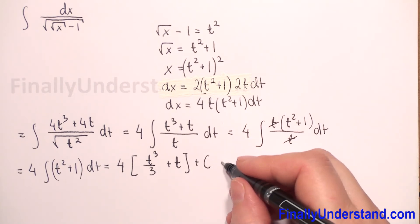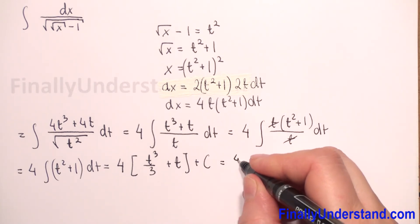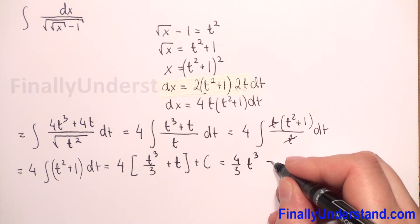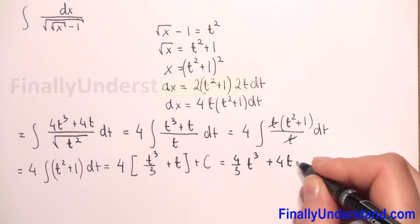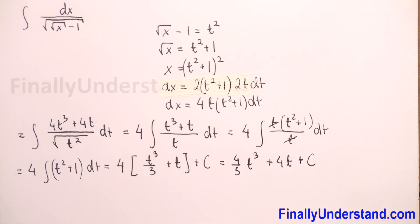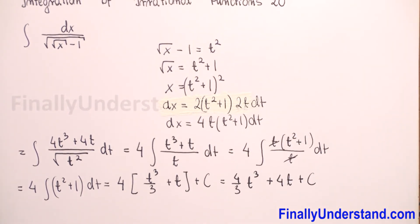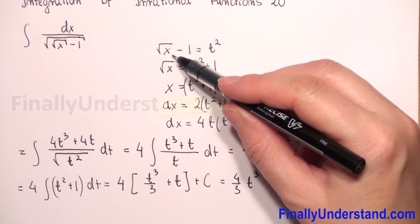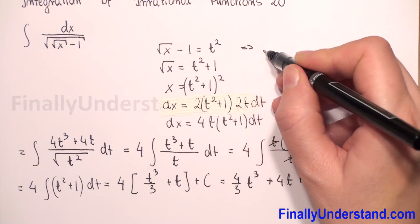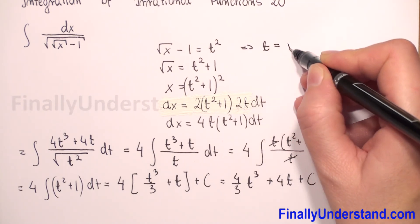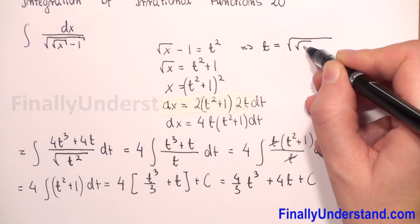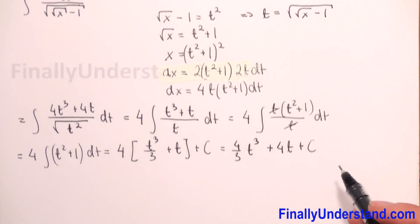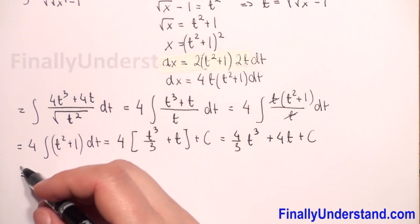So this is equal to 4 over 3 times t cubed plus 4t plus c. Now we have to come back to our substitution. We have that t squared is square root of x minus 1, which means t is equal to the square root of the square root of x minus 1. So now we will substitute our t's.